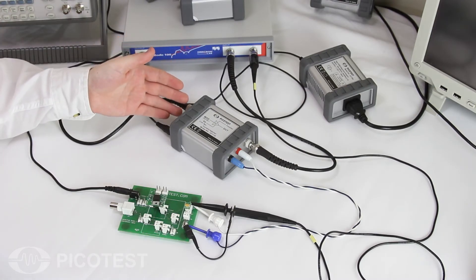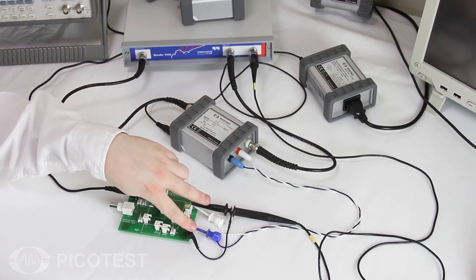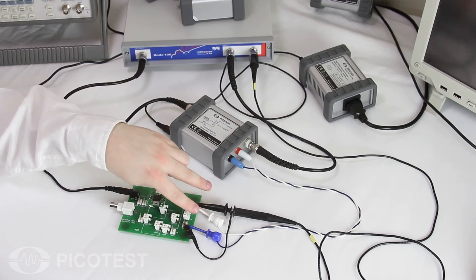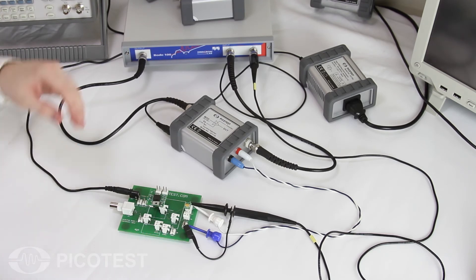The J2111A current injector plays two roles in this measurement. The first is to apply a constant current load to the circuit. The second is to modulate the load with a small additional AC current. The current is controlled by the frequency swept output voltage from the Bode 100 network analyzer.